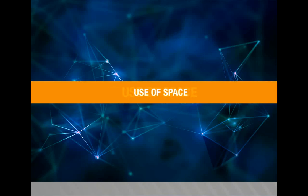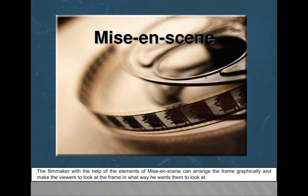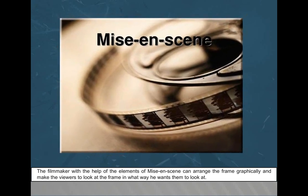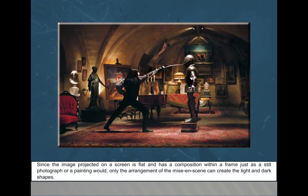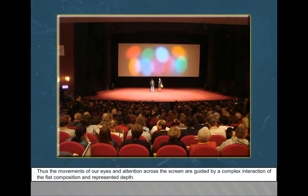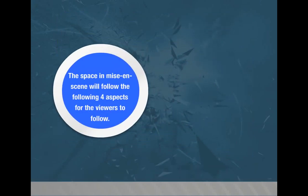The filmmaker, with the help of the elements of Mise-en-scène, can arrange the frame graphically and make viewers look at the frame in whatever way desired. Since the image projected on a screen is flat and has a composition within a frame — just as a still photograph or painting — only the arrangement of the Mise-en-scène can create the light and dark shapes. The movement of our eyes across the screen is guided by a complex interaction of flat composition and represented depth. The space in Mise-en-scène follows four aspects: movement, color, balance, and size.